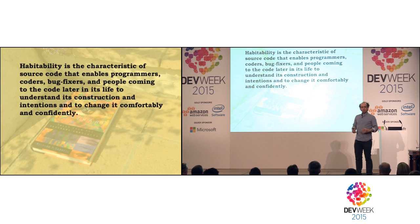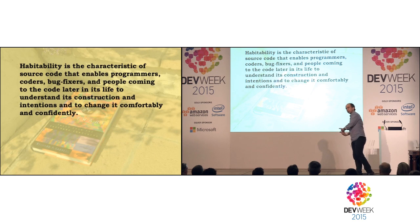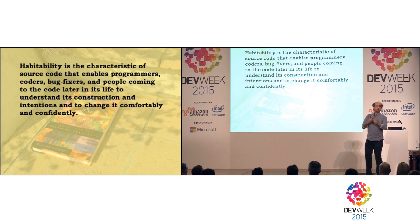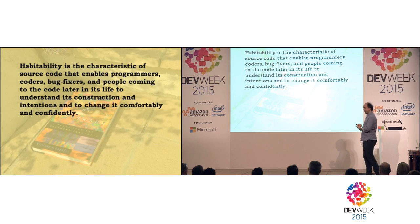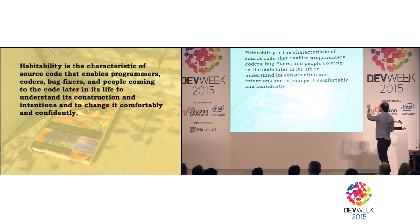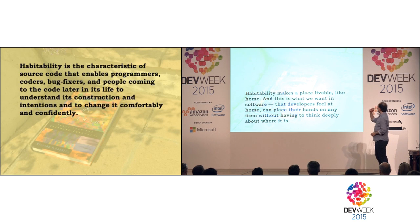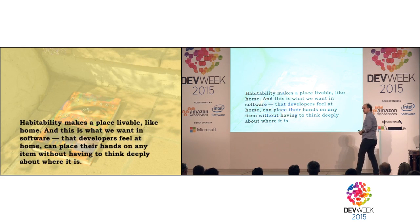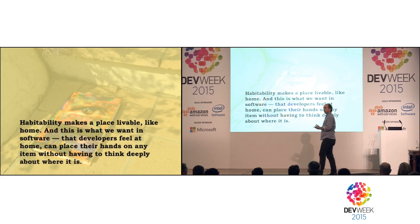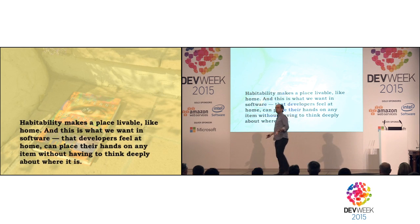People overlook this because they're focused on the task at hand, forgetting that what they're trying to do is create a model. When you write code, you're trying to project a model into somebody else's head — these words indicate the architecture and the way to extend and modify it. It also makes a place livable, like home, which is what you want to feel in the code base.